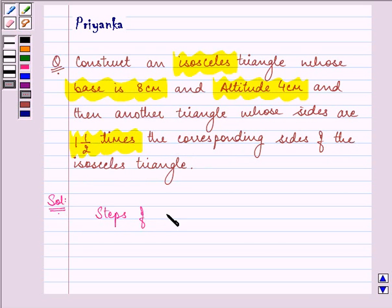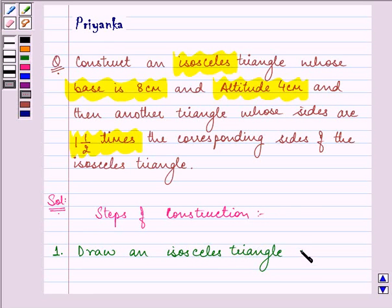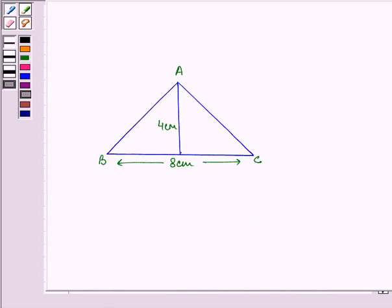The steps of construction will be: the first step is to draw a triangle, that is an isosceles triangle whose base is 8 cm and altitude 4 cm. So this is an isosceles triangle where AB is equal to AC, altitude let's say AD is 4 cm, and we have BC as 8 cm.